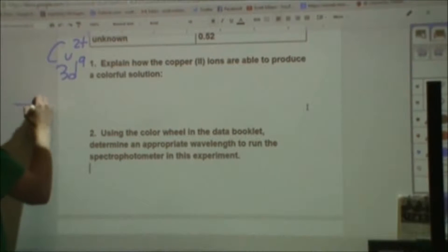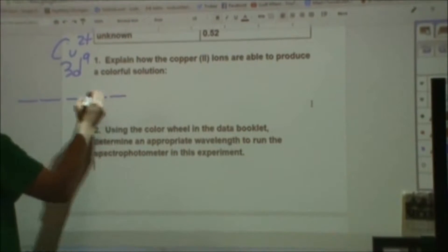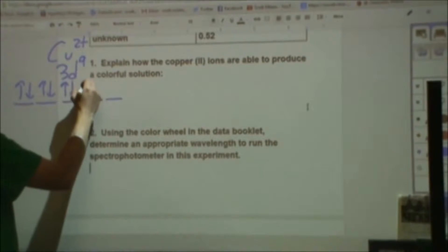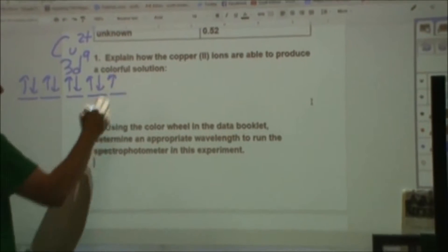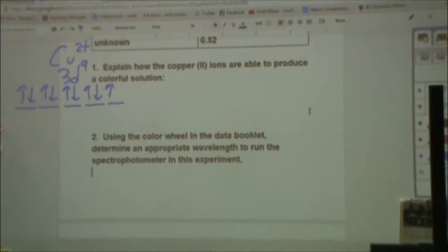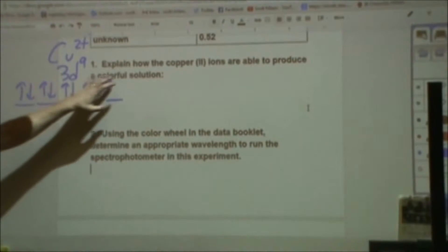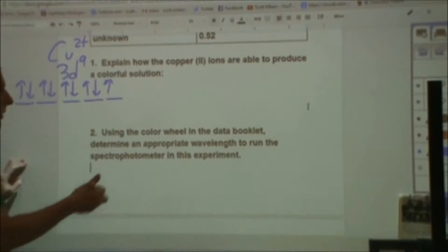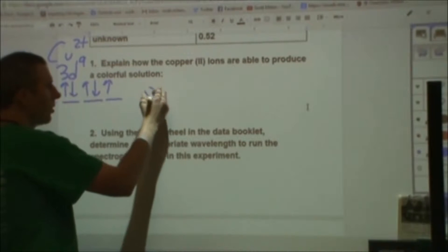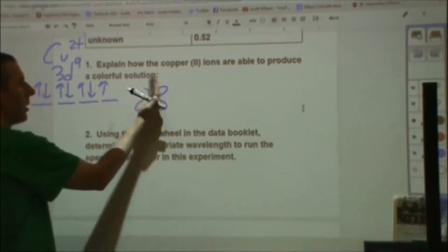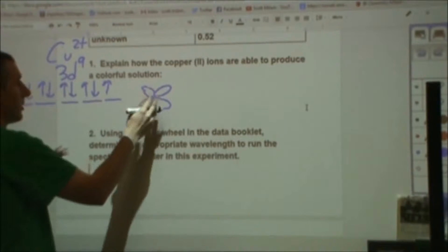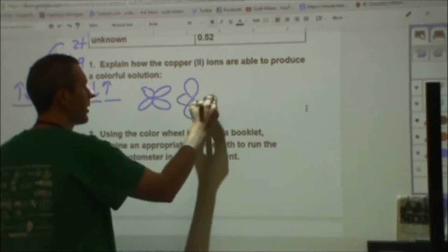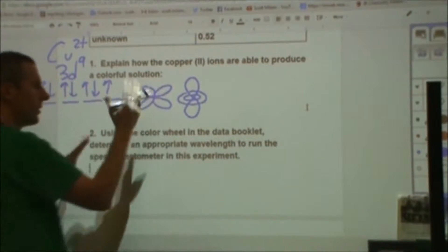If we look at the 3d9, usually we draw d orbitals where we have 5 all of the same energy or degenerate. We fill in our 9 electrons, each electron being represented by an arrow with its spin being up or down.